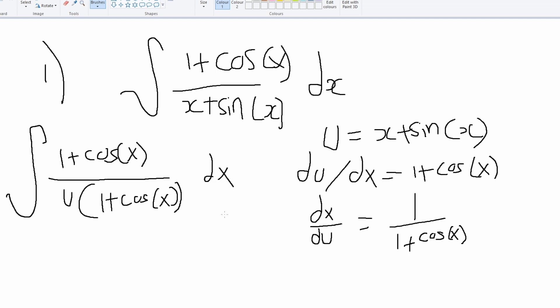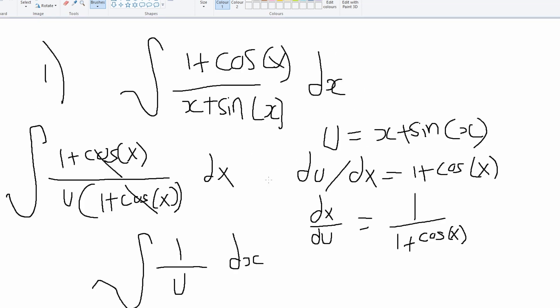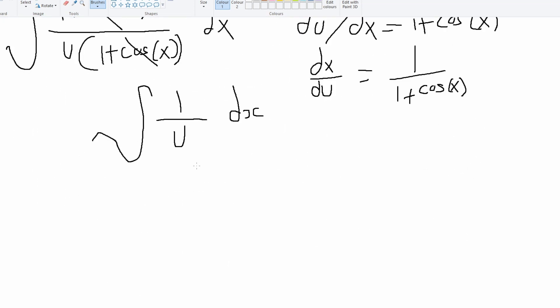Now as you can see, we have the same values down here and up here, so we can just cancel them out and they're just going to become one. So we'll just get the integral of 1/u with respect to x, and that's just ln(u) plus c.